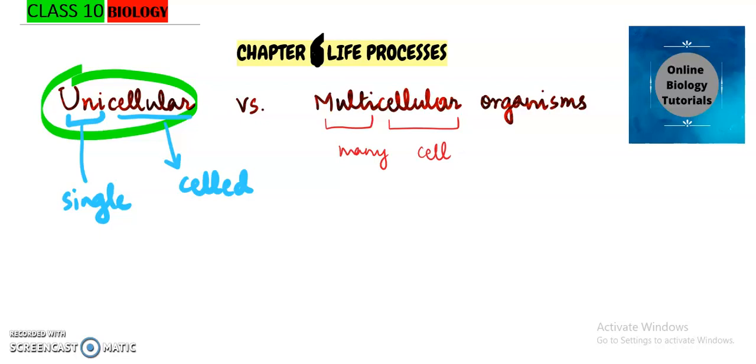Unicellular organisms are more primitive. When life originated on earth, these were the simple organisms that came to the earth long way back. We should know the examples of unicellular organisms: bacteria falls in this category, even amoeba is unicellular, and paramecium too is unicellular.